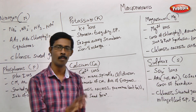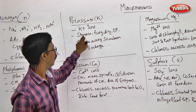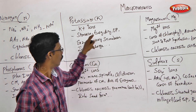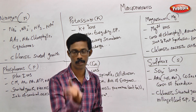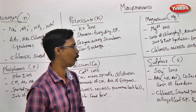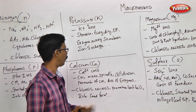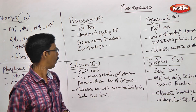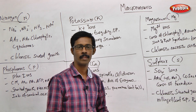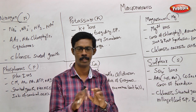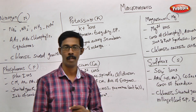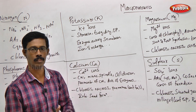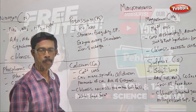If potassium is deficient, stomata cannot function normally — transpiration and gas exchange are impaired. Cells cannot maintain proper turgidity, and the entire plant body becomes weak. Osmotic potential cannot be maintained. Many enzymes become inactive due to the deficiency of K⁺ ions, and the cation-anion balance maintained by ion exchange is disrupted because K⁺ ions are deficient.